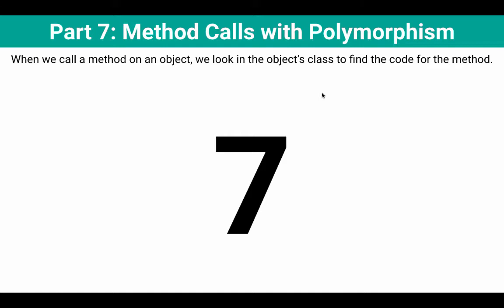We'll look at an example of this. We've got a repeat of one of the previous learning goals, which is: when we call a method on an object, we look in the object's class to find the code for that method.